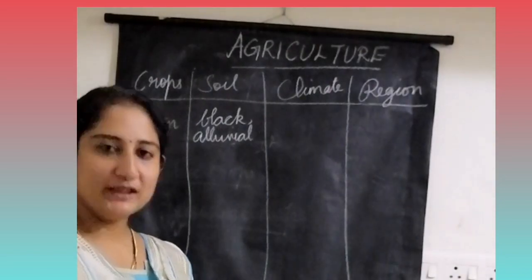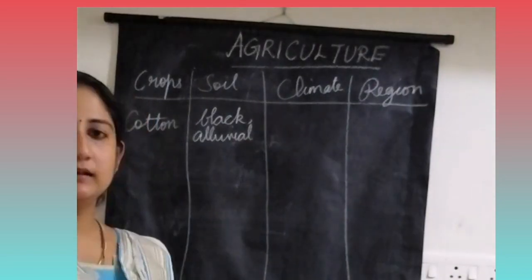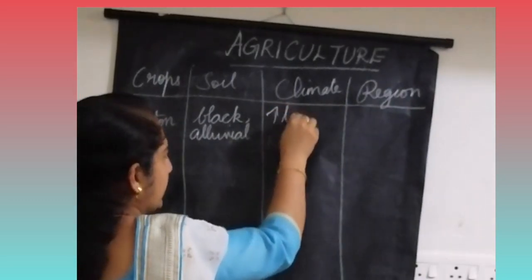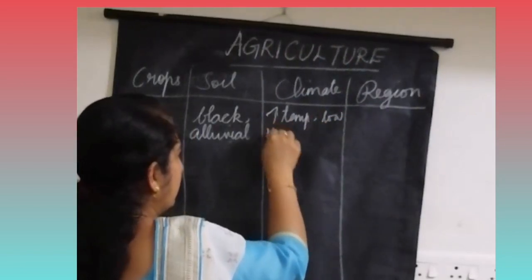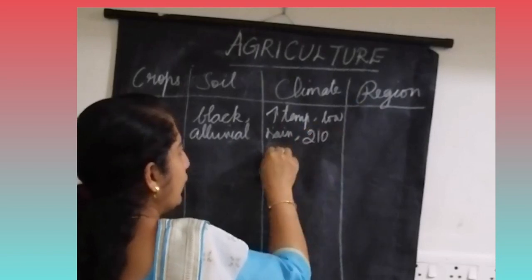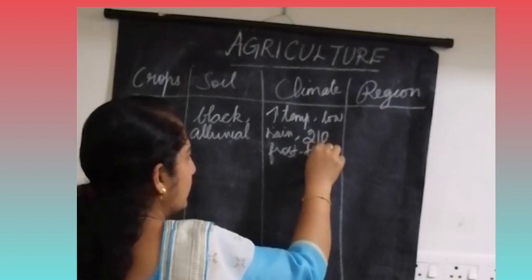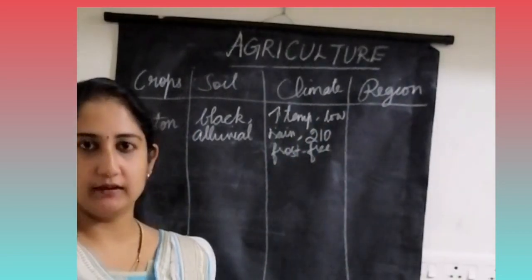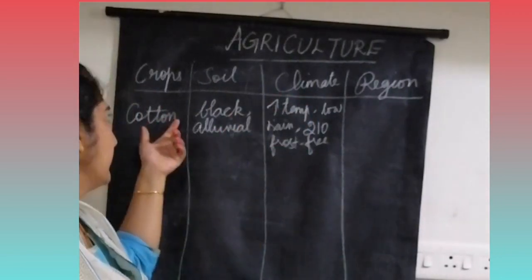Coming to the climate, cotton requires high temperature, low rainfall, and 210 frost-free days with medium sunshine. This is the climatic condition for the cultivation of cotton.